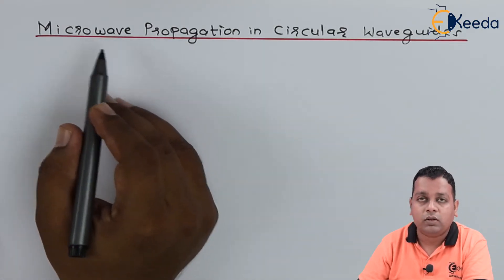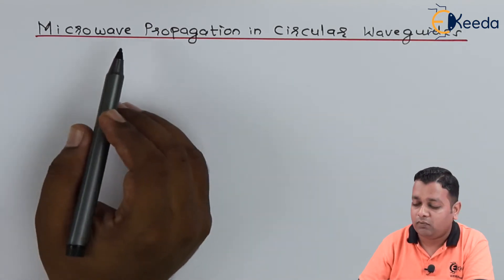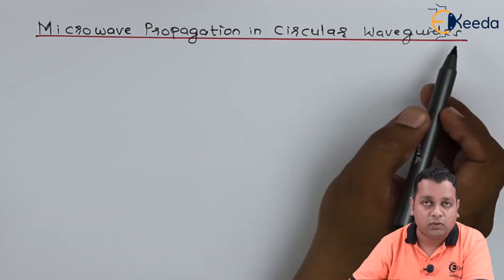So we want to have the propagation of such electromagnetic wave or microwave with higher frequency ranges inside a circular waveguide.